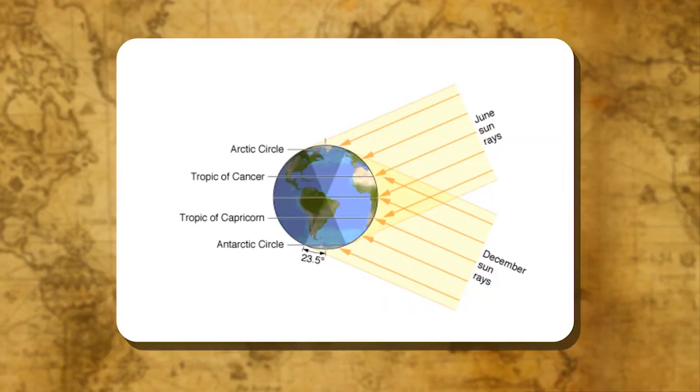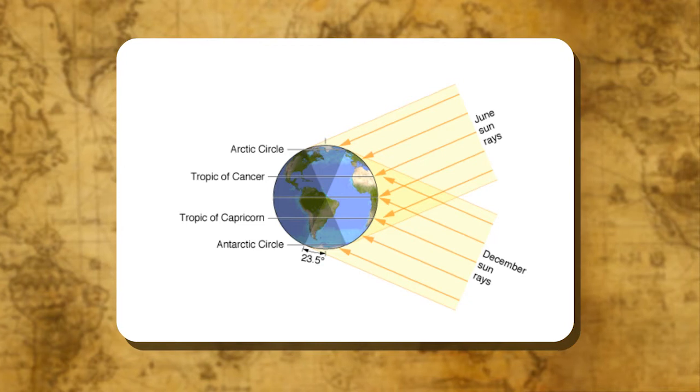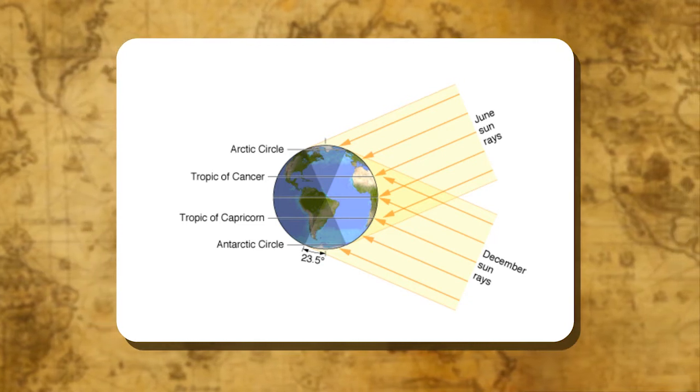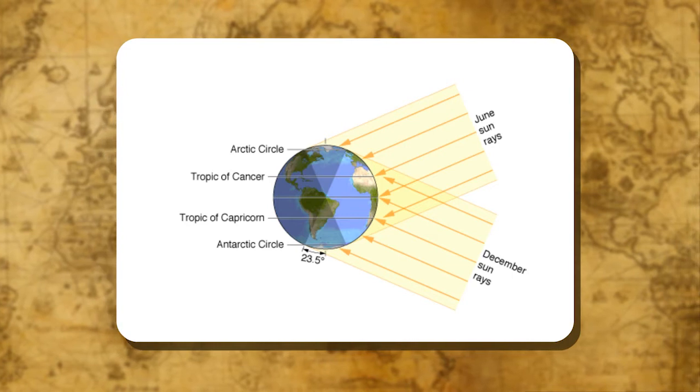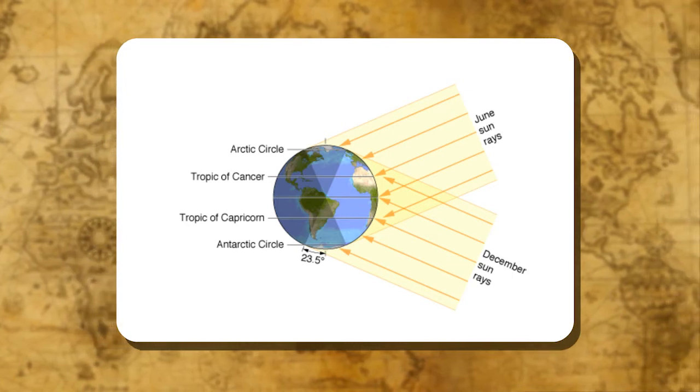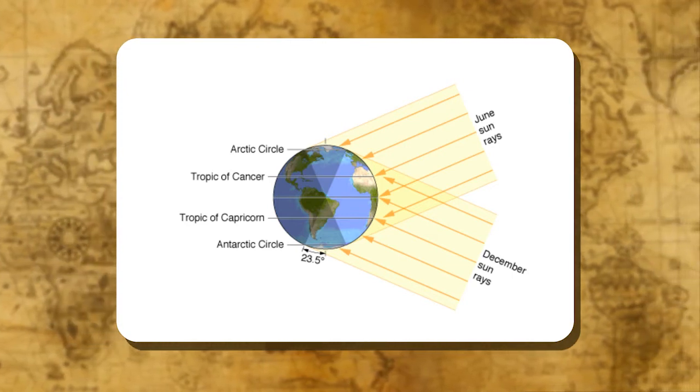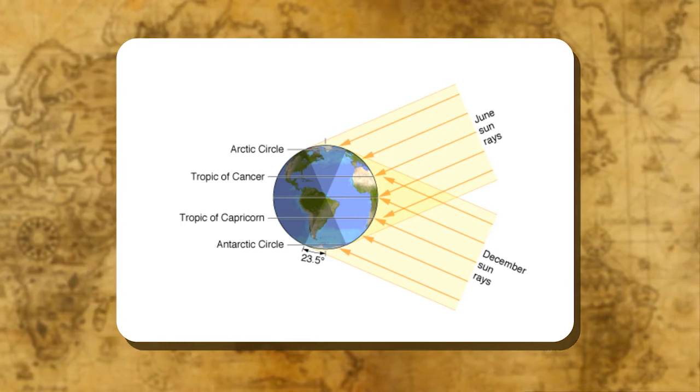Tropic of Capricorn: In the southern hemisphere, the parallel 23 and a half degrees south is called the Tropic of Capricorn. It also marks the limit of that portion where the sun's rays fall vertically on 22nd December.